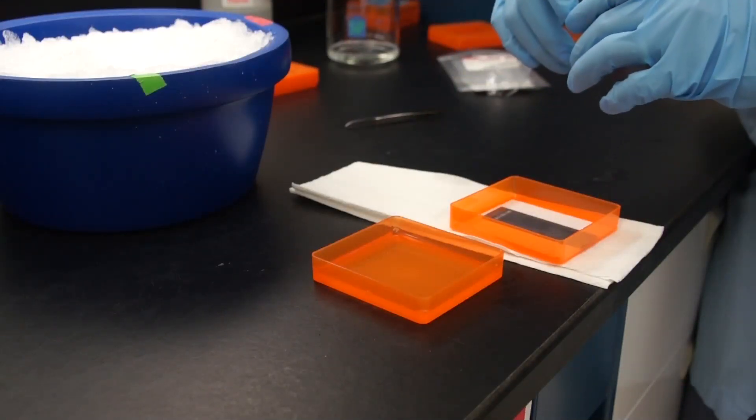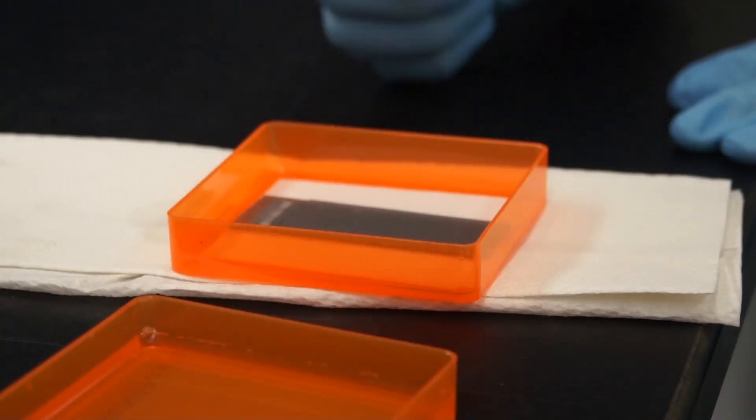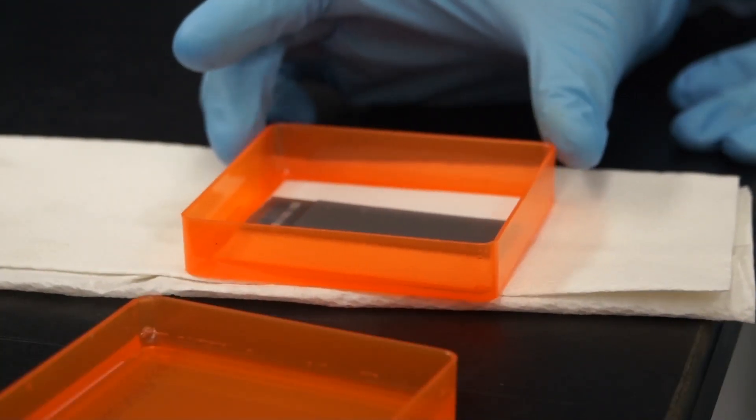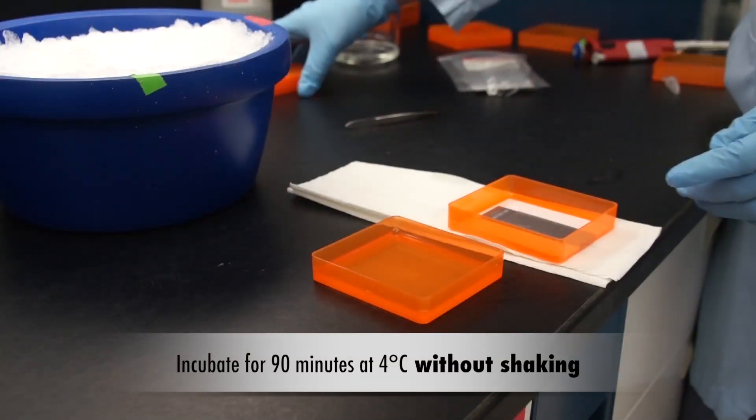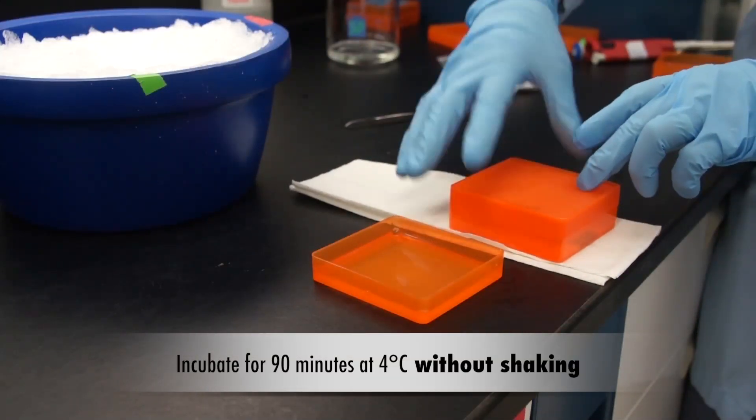Cover the slide with a coverslip like so, and place in an incubation chamber with wetted blotting paper lining the bottom for 90 minutes at 4 degrees Celsius.